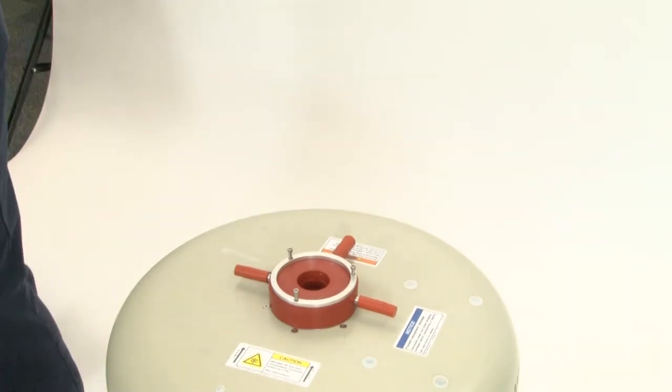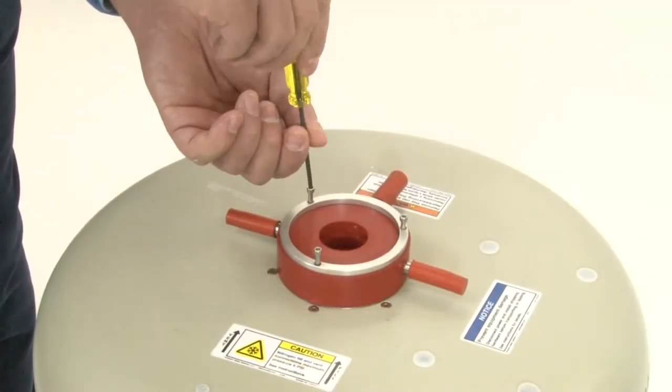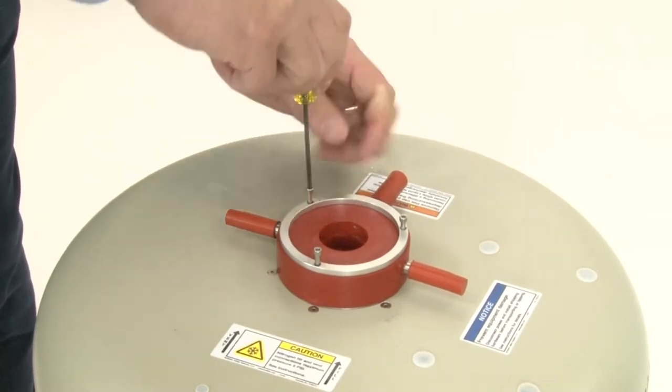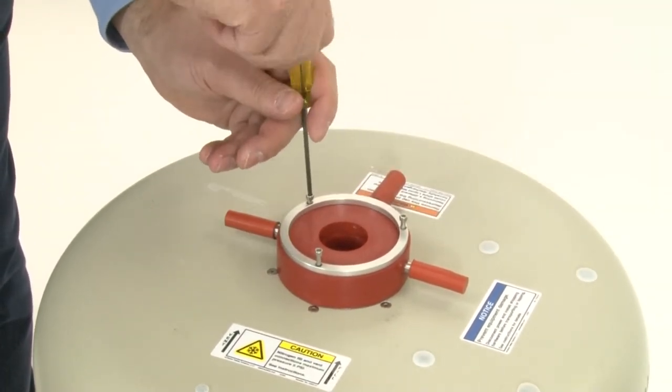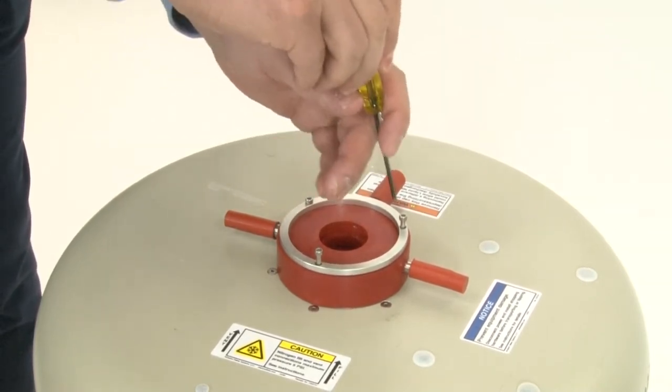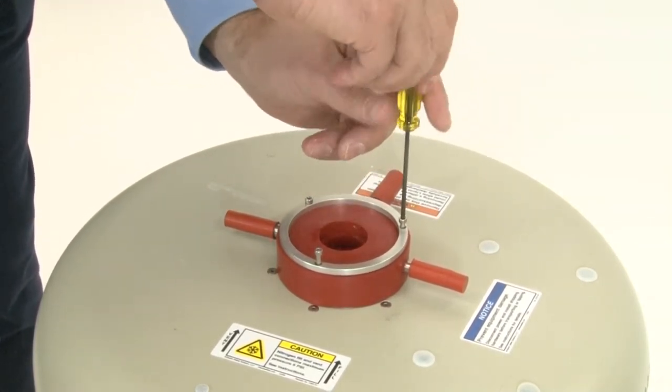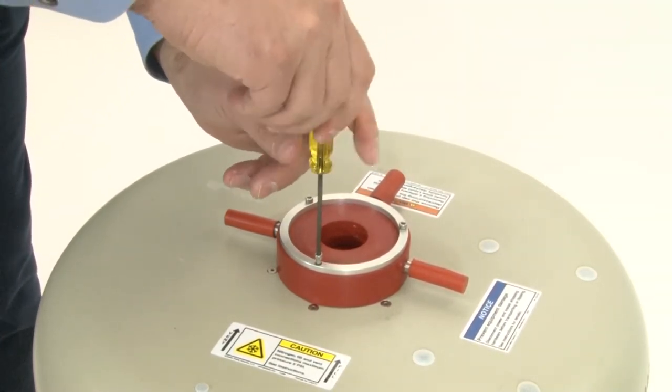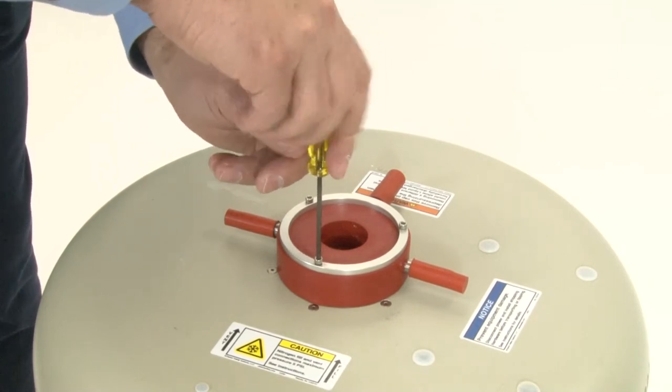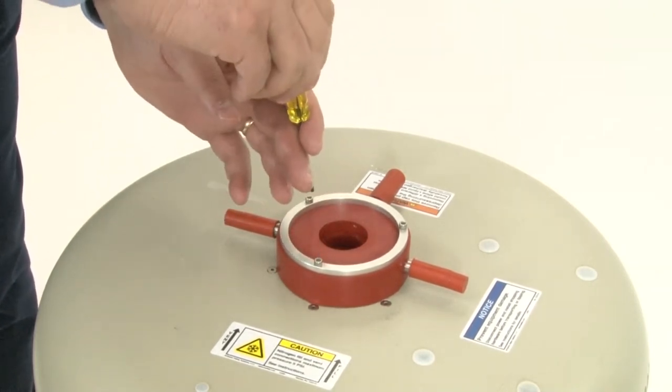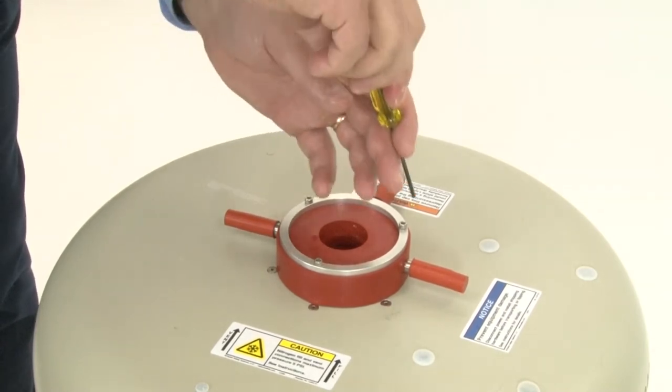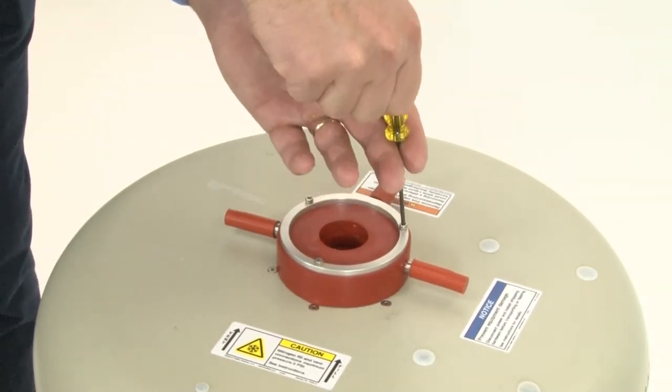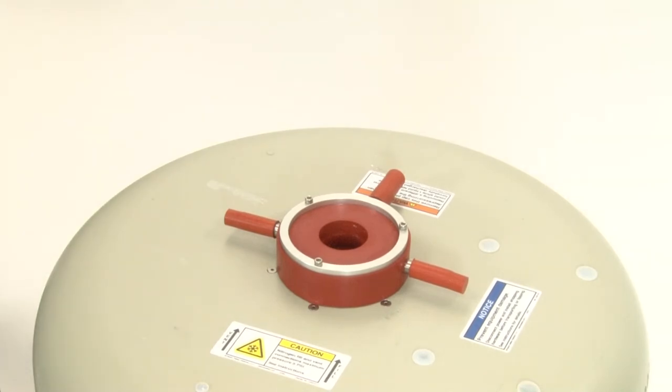So we put that down. We take our 7/64th Allen hex wrench and we screw down our three screws. Screw them all until they just touch the top of the mounting ring. And then go back and tighten them down. Tighten them down hand-tight. It is possible to over-tighten the collar. If you tighten it too tight, you'll deform the collar and make a potential leaking path. So hand-tight is all you need to do. So that's the collar. The collar is now properly installed.